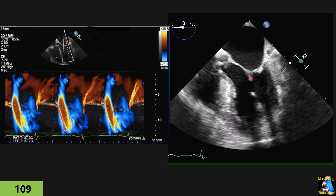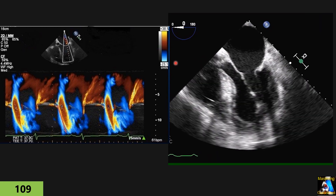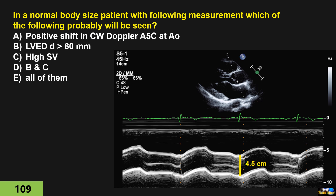In a patient with normal body size, the following M-mode study has been done and some parameters measured. Based on this, which of the following would you probably expect to find: positive shift on continuous Doppler at the apical five-chamber aorta; LV end-diastolic diameter greater than 60 mm (6 cm); high stroke volume; B and C together; or all of them?